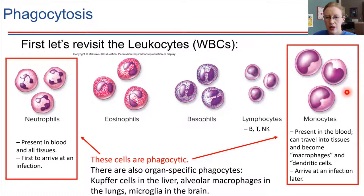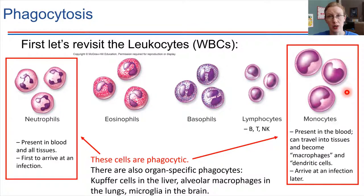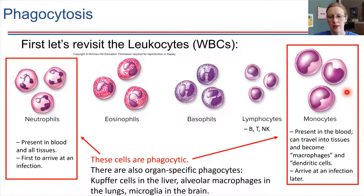The lungs would be another site where we have to be able to deal with pathogens — another example of a place where there are macrophages that are always present and ready to engulf pathogens as needed. Microglia — we mentioned microglia back when we were talking about the nervous system. Microglia hang out in the brain and help to facilitate the health of the brain. This is one of the things they do — they're capable of phagocytosing foreign objects.